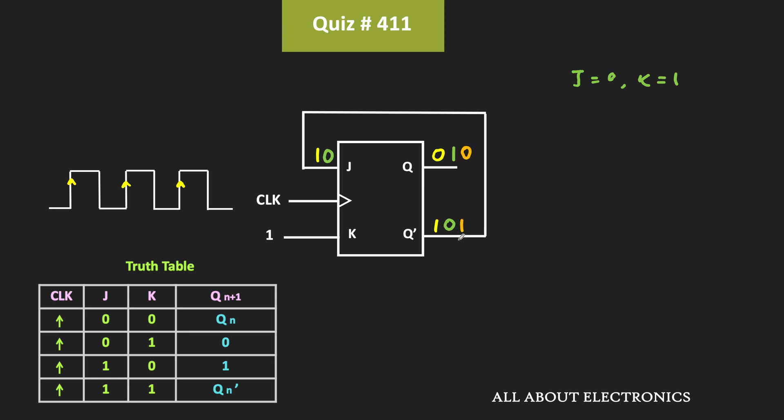And the same 1 will once again appear over here. That means now, this J input is 1, while the K input is also equal to 1. So once again, since both inputs are 1, the output of the flip-flop will toggle. And once again, this Q will become 1.